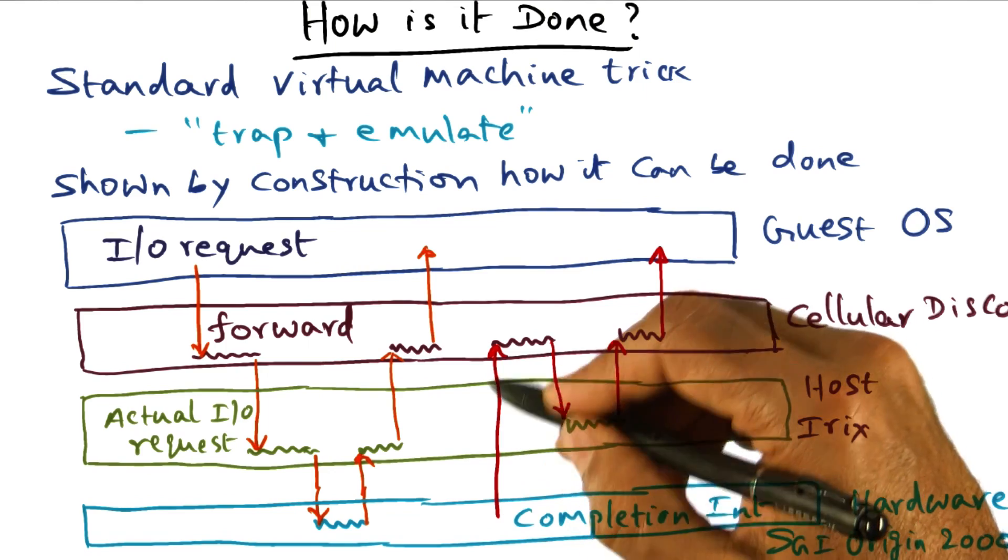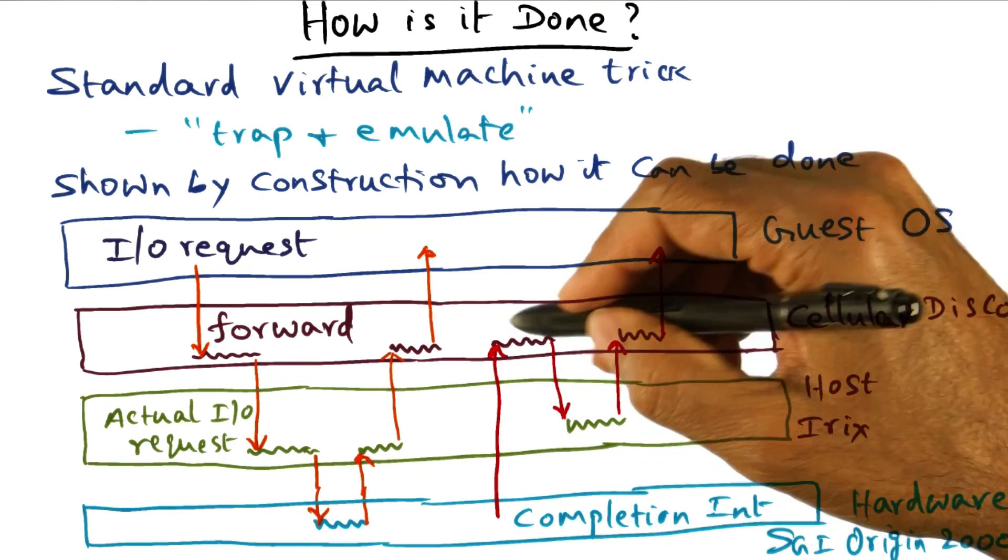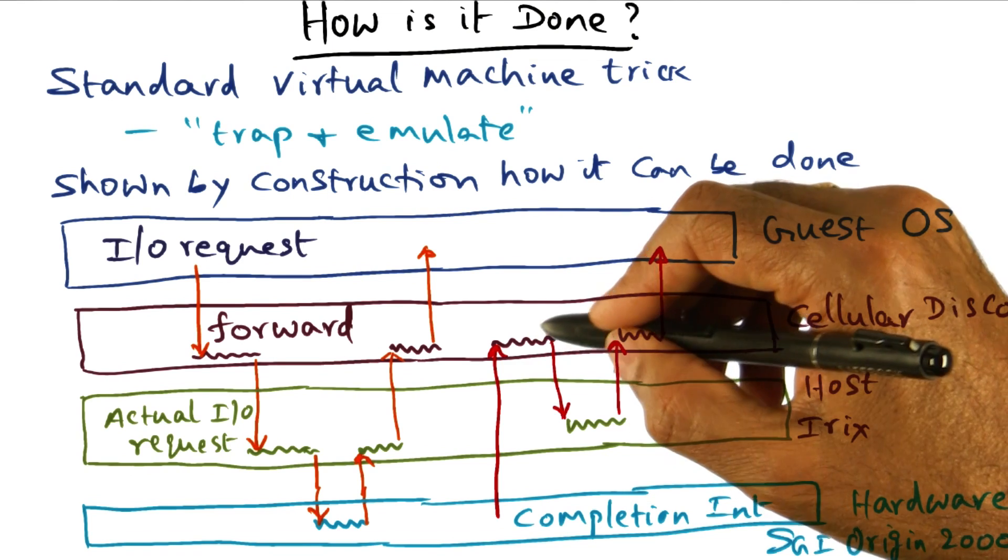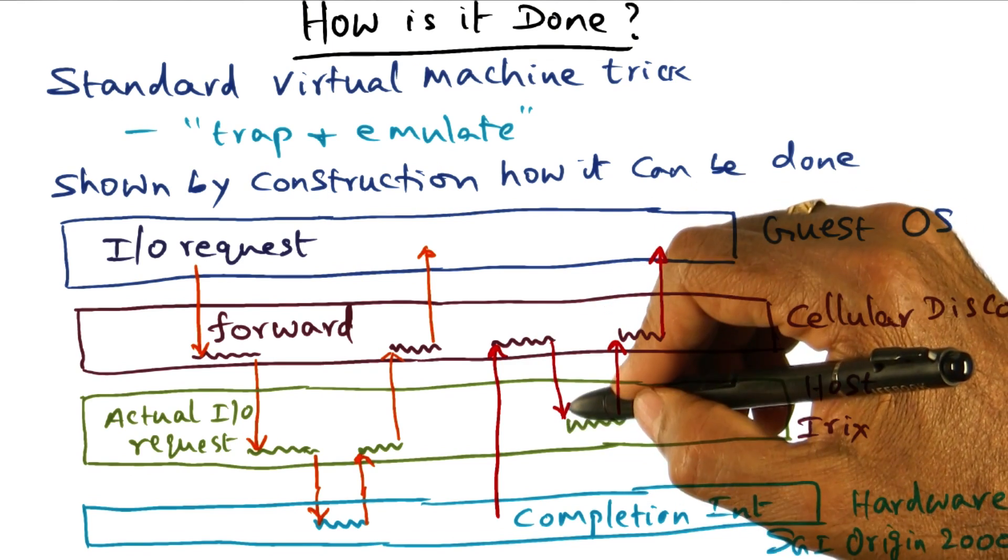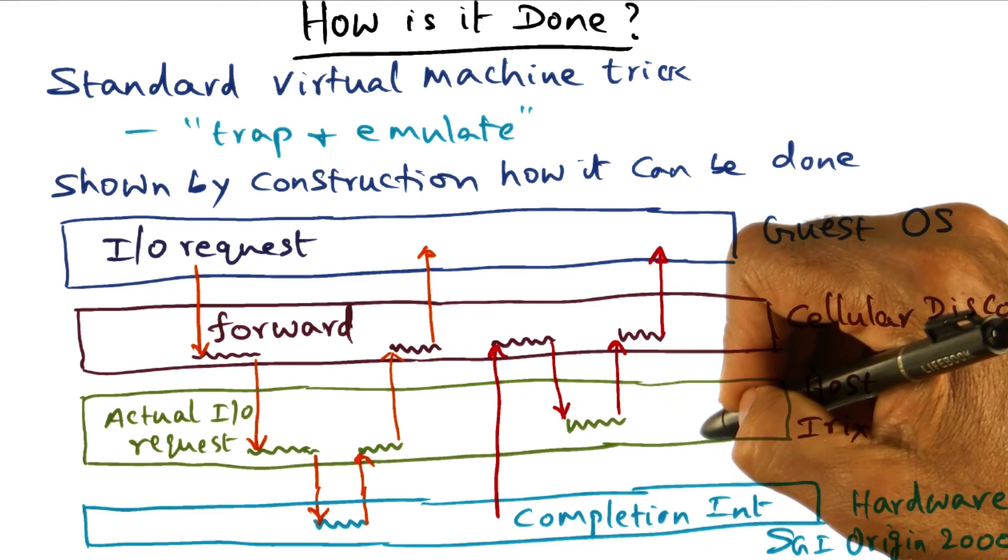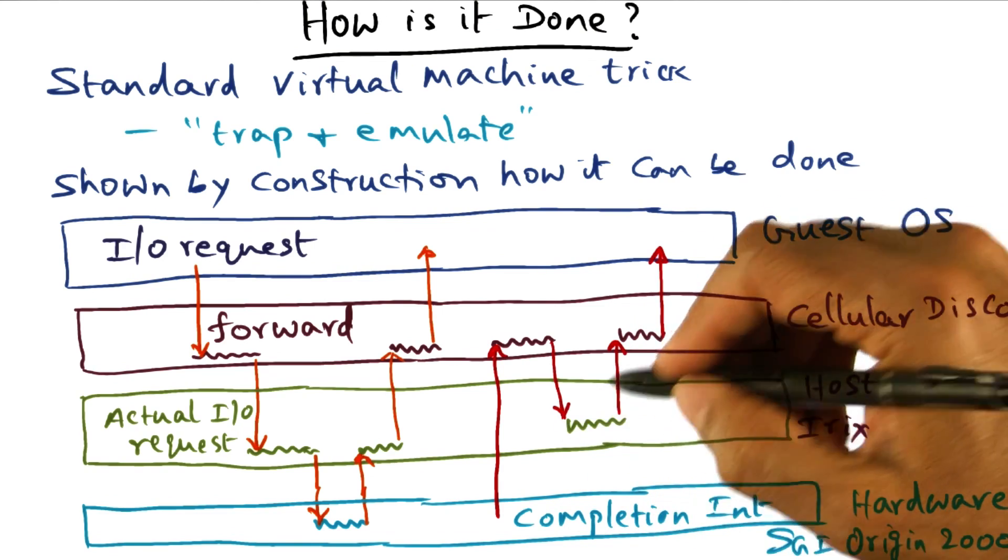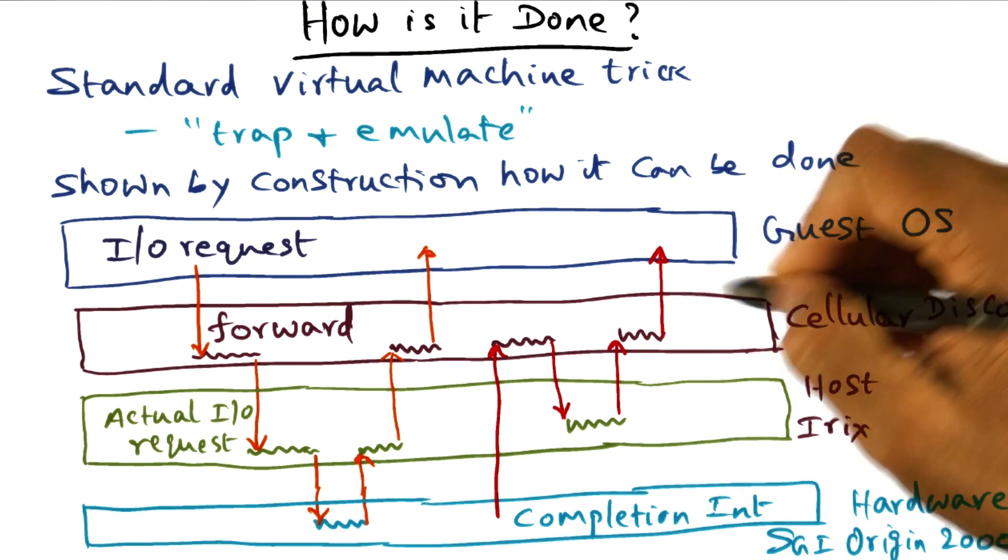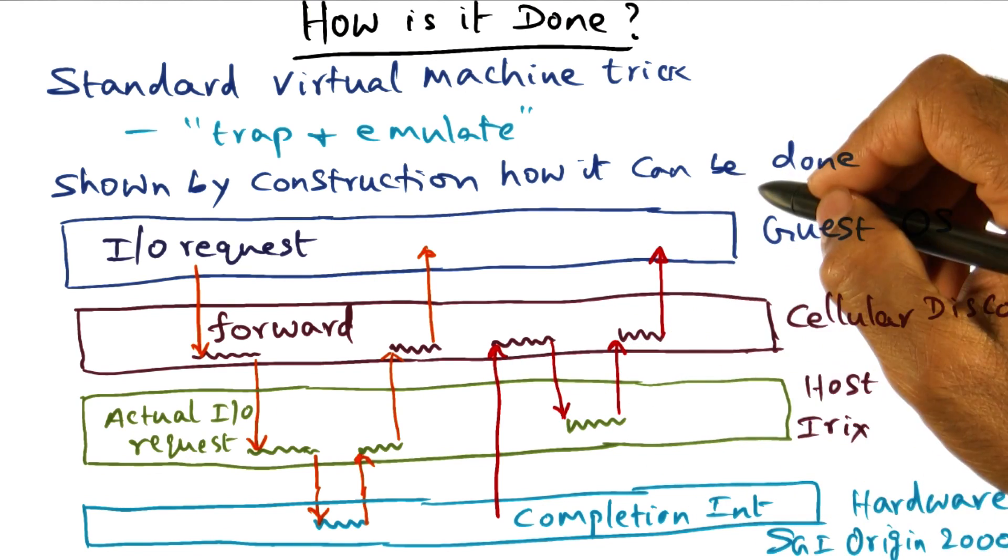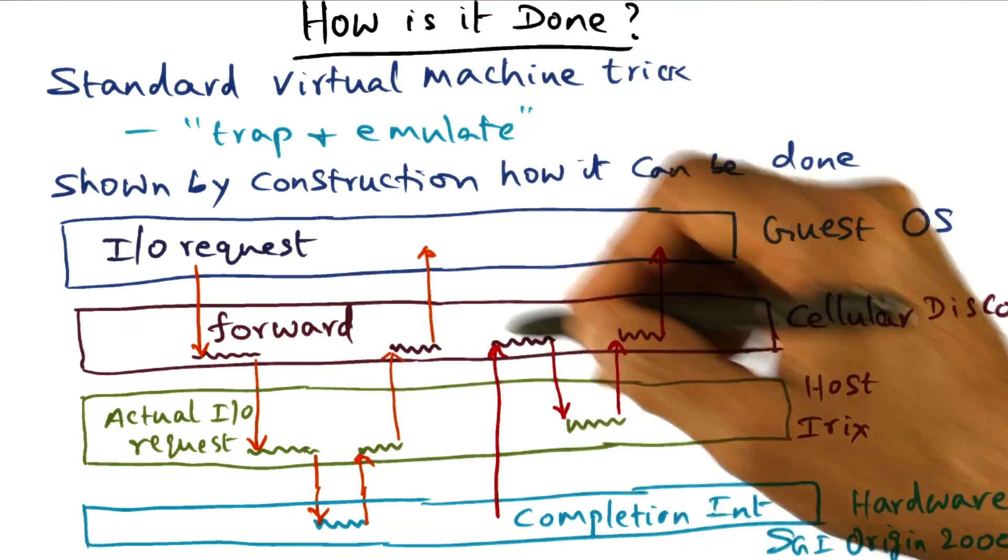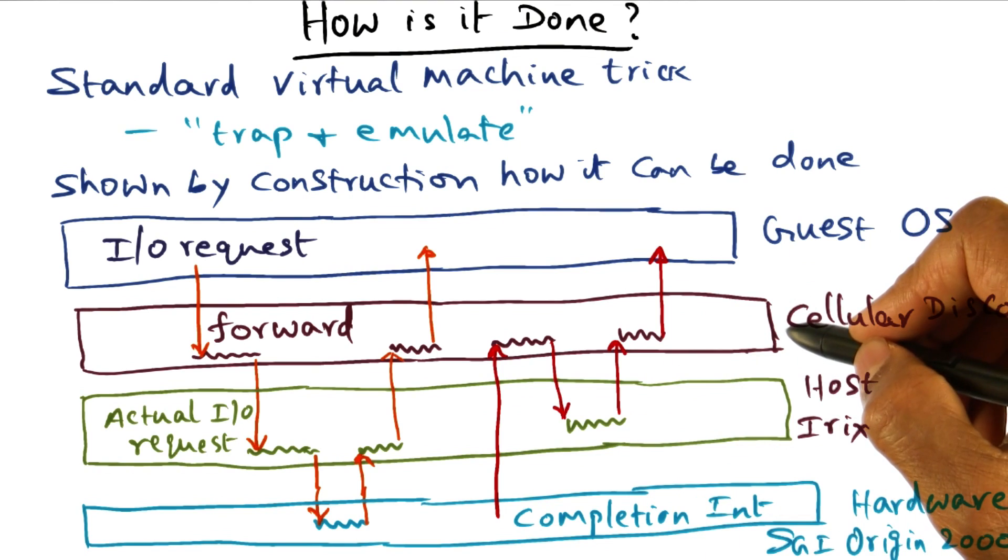That's the magic that was done in the forward path. Therefore when the completion request happens, it really calls the VMM layer. The VMM layer does what it needs to do and makes it appear as though it's a normal interrupt coming from the device back to the host Irix operating system. The host Irix operating system in turn passes it back to Cellular Disco and then on to the guest operating system.